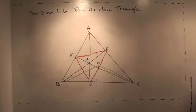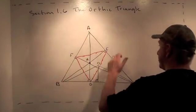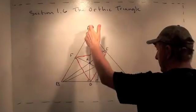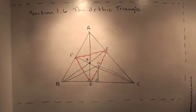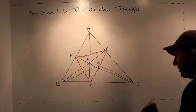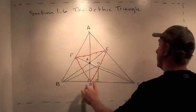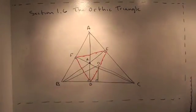So, the Orthic Triangle. We have our usual triangle ABC. And we draw the altitudes, AD, CF, BE. And then we connect the feet of the altitudes in a triangle, D, E, F. And D, E, F is called the Orthic Triangle of Triangle ABC.